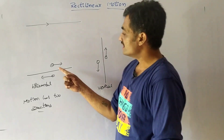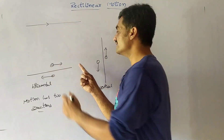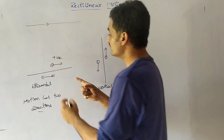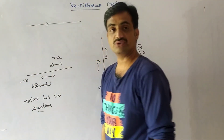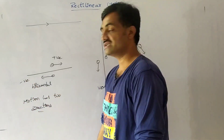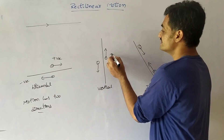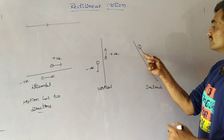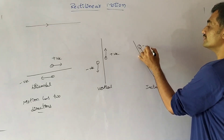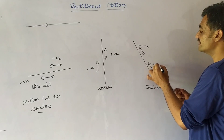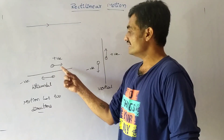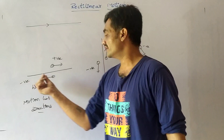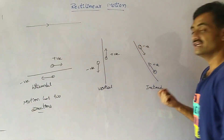We can apply sign conventions to this straight line motion. Suppose if we consider the body moving towards the right as positive, then the body moving in the opposite direction is considered as negative. If the body moving in the upward direction is considered as positive, then the body moving in the downward direction is considered as negative. In the same way, if the body moving down the inclined plane is negative, then moving up the inclined plane is positive.